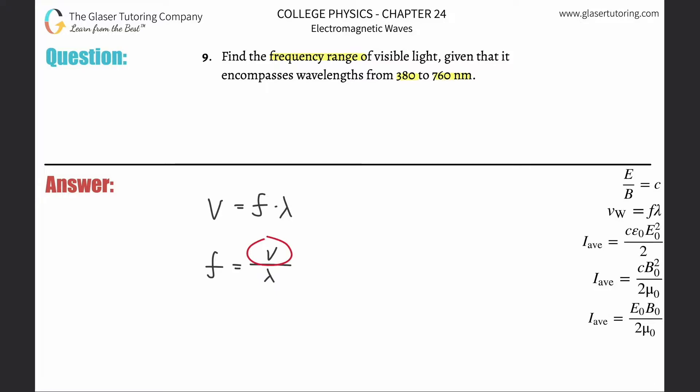Now you might say, wait a minute, they didn't give us the velocity. Well, we are assuming that this is an electromagnetic wave traveling in a vacuum. If that's the case, the velocity then is the speed of light.